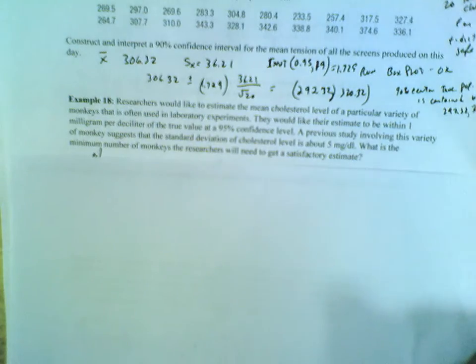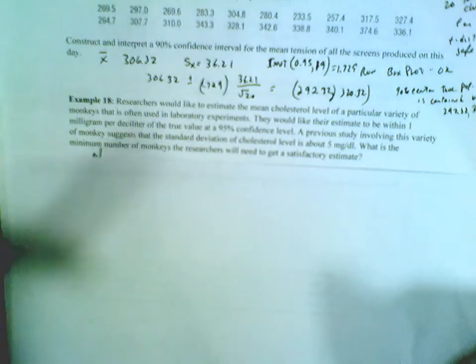I'm going to make quick work of Example 18 from Chapter 8, Part 3. Researchers would like to estimate the mean cholesterol level of a particular variety of monkeys often used in laboratory experiments. They want their estimate to be within 1 milligram per deciliter of the true value at a 95% confidence level.